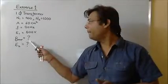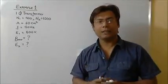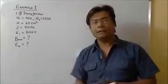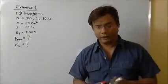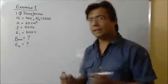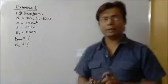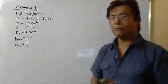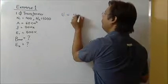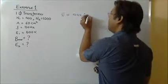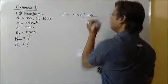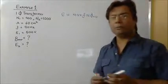So we have to find Bmax which is the maximum flux density of the core, and secondary terminal voltage. So what is the formula? We have studied this formula just before: E equals 4.44 F N φmax. We have studied this formula.